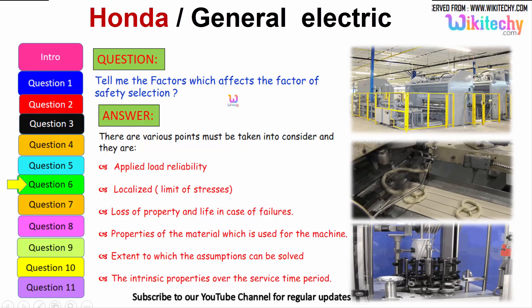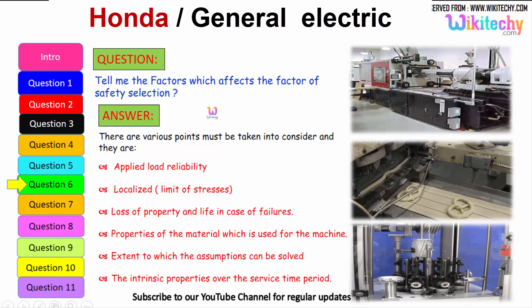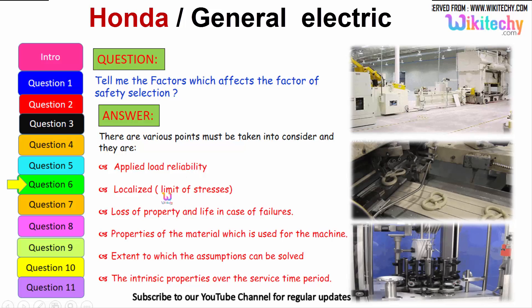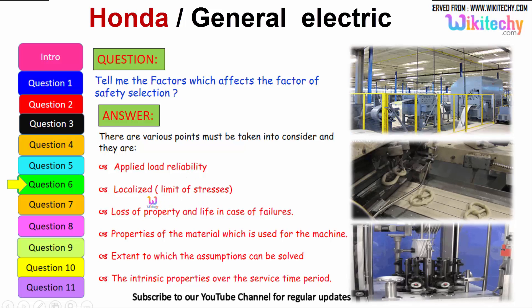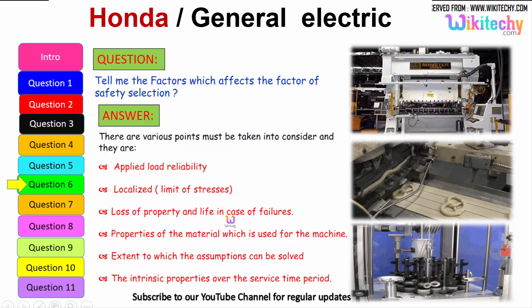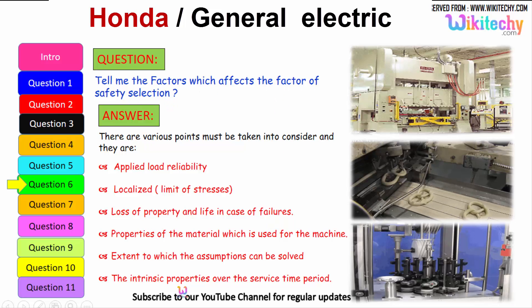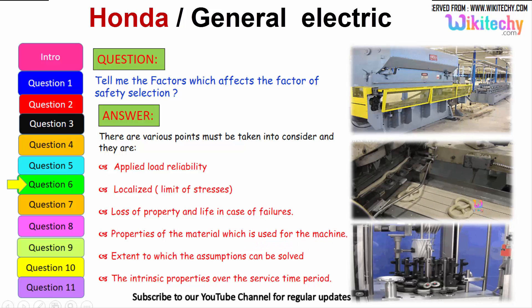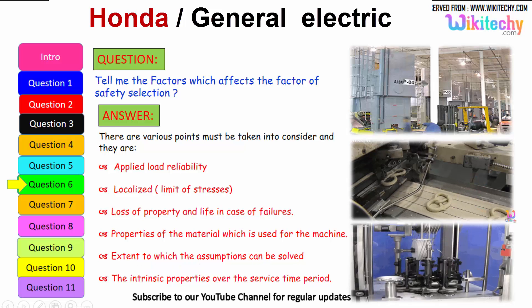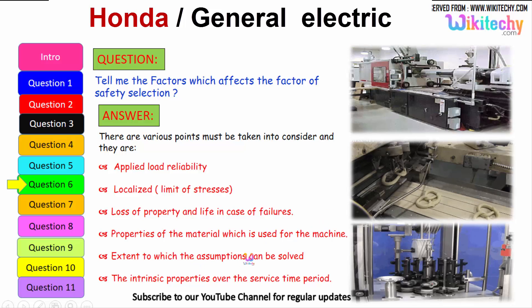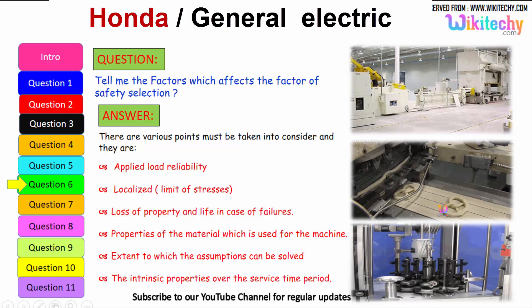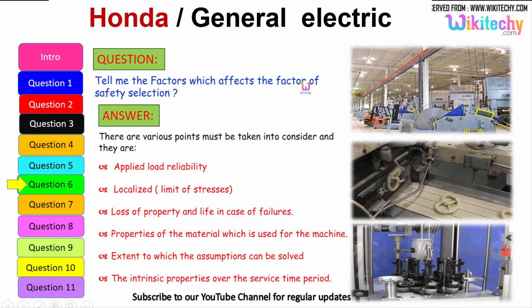Now let's see the factors which affect the factor of safety selection. Here are some of the factors: applied load reliability, limit of stresses thus localized, loss of property and life in case of failures - this is a very important factor you should understand on safety selection. Properties of the material which is used for the machine. The extent to which the assumptions can be solved - how much it will extend, compress or something like that. The intrinsic property over the service time period, how it will sustain, everything we need to manipulate for the factor of safety selection.